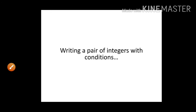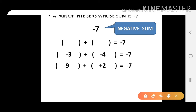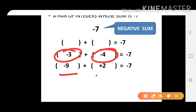Now we will learn how to write a pair of integers with specific conditions. For a pair of integers whose sum is minus 7, we need a negative sum. There are two ways to get a negative sum: add two negatives, or add a bigger negative and a smaller positive.